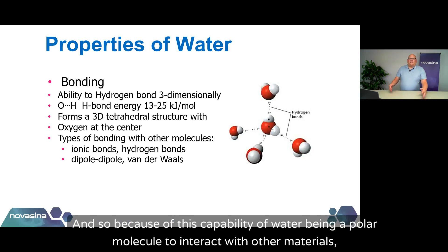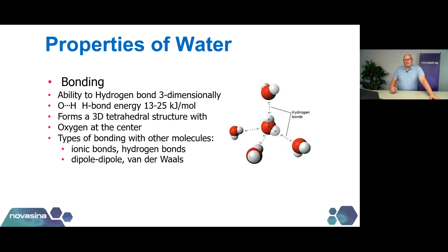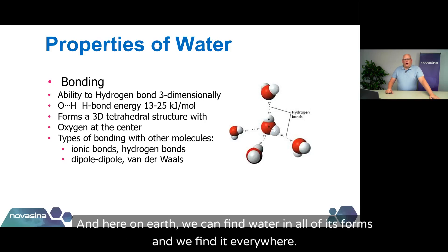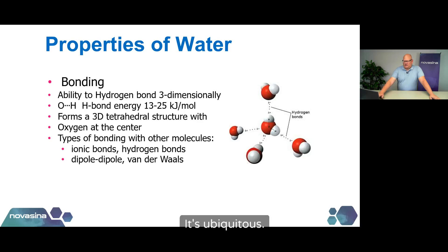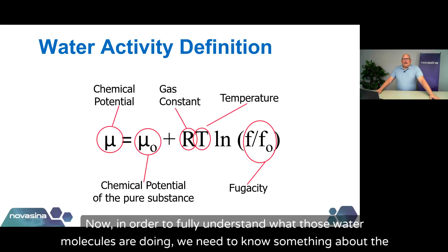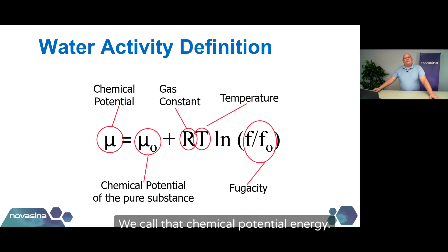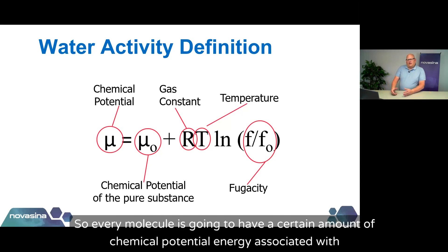Because of this capability of water as a polar molecule to interact with other materials, it becomes very important as a solvent and as a general ingredient in a product. Here on Earth, we find water in all of its forms everywhere — it's ubiquitous. In order to fully understand what those water molecules are doing, we need to know something about the energy state of the water molecules that are present. We call that chemical potential energy. Every molecule has a certain amount of chemical potential energy associated with it.